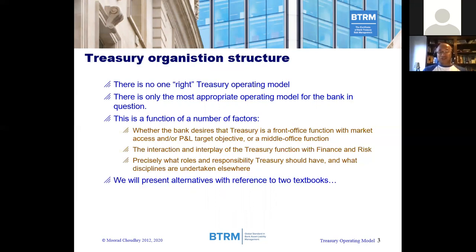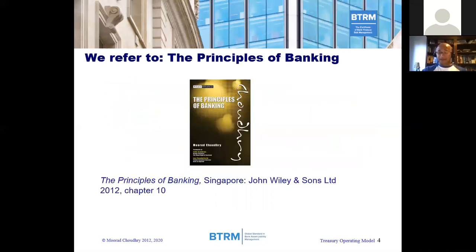The first thing to determine is the roles — the range of disciplines that treasury should be responsible for — and also whether it should have a front office market access and profit and loss objective, or simply be a middle office risk management function. We're going to present alternatives with reference to two textbooks. The first one is The Principles of Banking published by John Williams, and we're going to reference chapter 10 from this book.